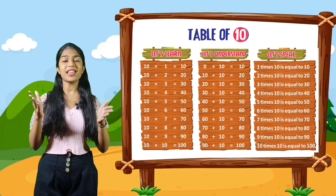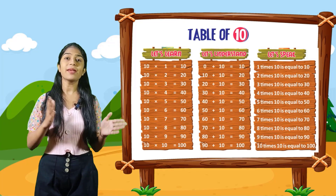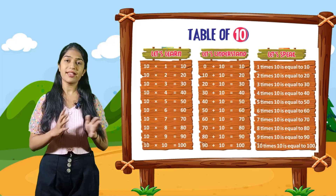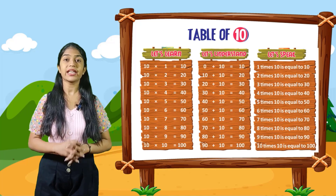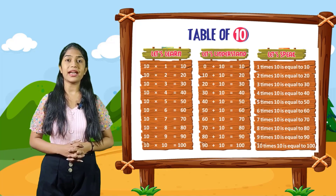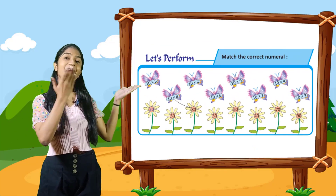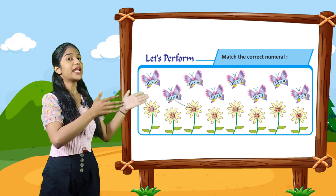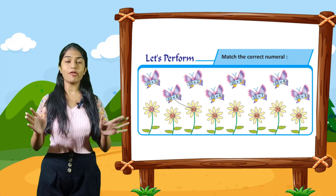So now let's speak. You have to speak out with me. 1 times 10 is equal to 10. 2 times 10 is equal to 20. 3 times 10 is equal to 30. 4 times 10 is equal to 40. 5 times 10 is equal to 50. 6 times 10 is equal to 60. 7 times 10 is equal to 70. 8 times 10 is equal to 80. 9 times 10 is equal to 90. 10 times 10 is equal to 100. So now let's perform. Match the correct numerals. 10 times 8 is equal to 80, so 80 is the correct answer.